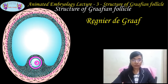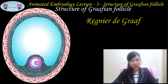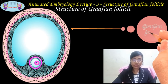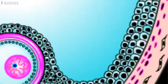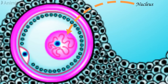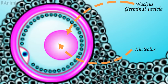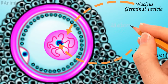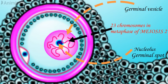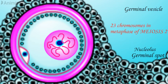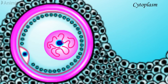The name Graafian follicle was given after a Dutch scientist Rainer de Graaf, for his discoveries in the field of reproductive biology. On the screen we can see a very large Graafian follicle. In that we can very well appreciate the nucleus in the center with the nucleolus. The nucleus is very large and is called the germinal vesicle, and the nucleolus is called the germinal spot. The nucleus has 23 chromosomes and is present in the metaphase of the second meiotic division. Around the nucleus we can see the cytoplasm; the cytoplasm of the oocyte is called ooplasm.